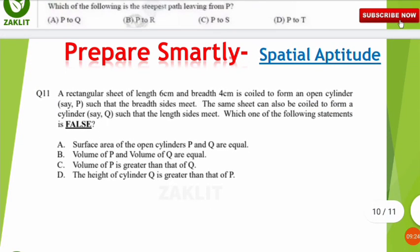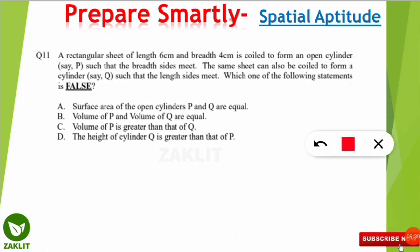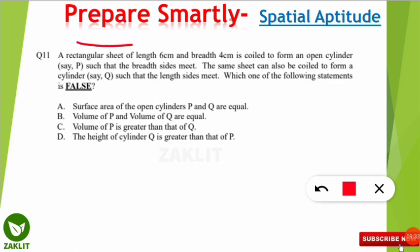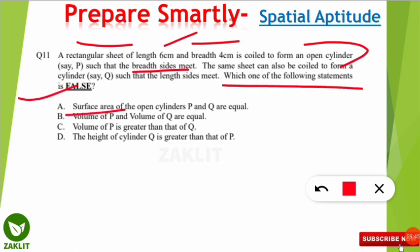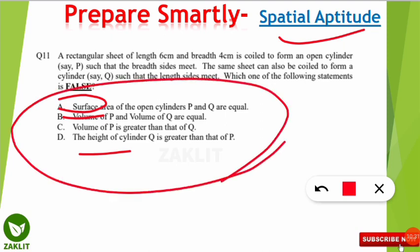Coming to spatial aptitude, which was recently included, a sample question asks: 'A rectangular sheet of length 6 cm and breadth 4 cm is coiled to form a cylinder — which statement is false?' You must identify the surface area and volume. These questions fall under mensuration, so if you know surface area formulas for spheres, cylinders, and volumes, you can crack this part easily. Spatial aptitude is essentially an application of numerical aptitude.